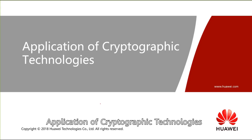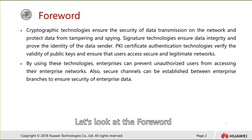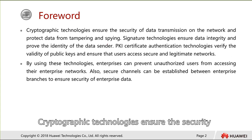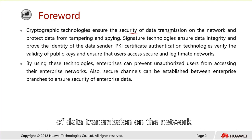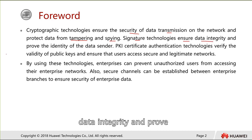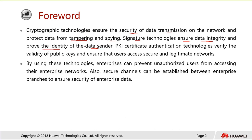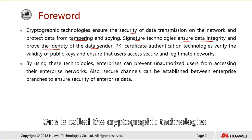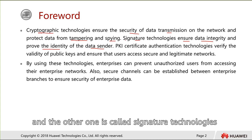Let's look at the four words: cryptography technologies ensure the security of data transmission on the network and protect the data from tampering and spying. Signature technologies ensure data integrity and prove the identity of the sender. So here we have two things: cryptographic technologies and signature technologies.